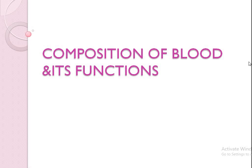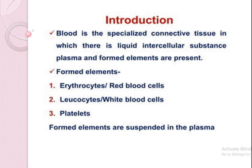Good morning to everybody. Today we are going to discuss about composition of blood and its function. Blood is the specialized connective tissue in which there is a liquid intracellular substance called plasma and formed elements are present. Formed elements are erythrocytes called red blood cells, leukocytes called white blood cells, and platelets. Formed elements are suspended in the plasma.